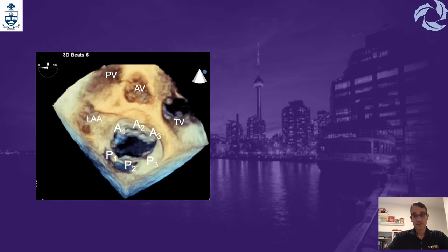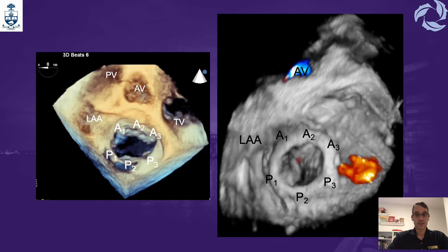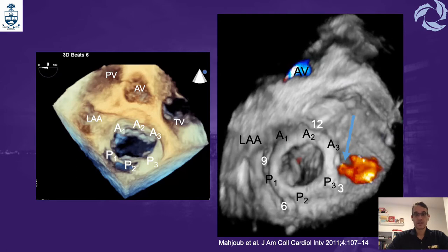To report a mitral valve prosthesis paravalvular leak location, we use the extrapolation of the Carpentier mitral valve classification. With 3D color flow on a prosthetic mitral valve, the position of the mitral valve scallops is used to locate the leak. Remember that up to 27% of patients where one leak is found may have more than one leak, so it is important to look carefully before concluding.